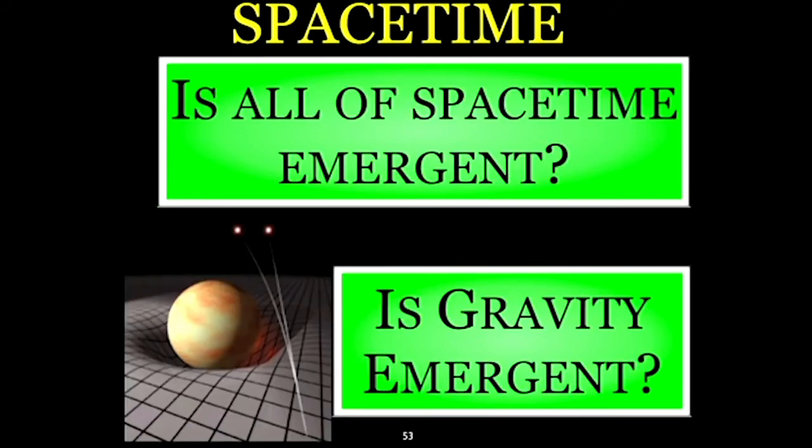And of course, gravity is dynamical space-time, Einstein taught us. Gravity also can be thought of as emergent. Emergent from what? Well, we have examples using these different ways of representing physical phenomena, sometimes in terms of strings and gravity, sometimes in terms of more ordinary quantum mechanical systems.